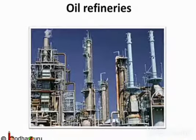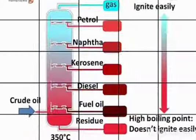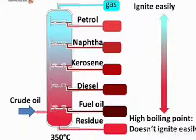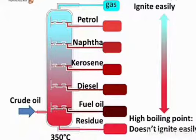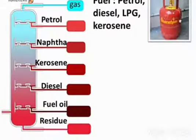Petroleum is a complex mixture. Petroleum refining means separating its components, and it is carried out at petroleum refineries. This separation process is known as fractional distillation. This process separates chemical components by their boiling point. The mixture is heated to a temperature at which one or more fractions of the compound will vaporize. Different components vaporize at different temperatures and thus get separated.